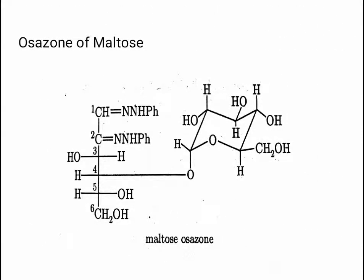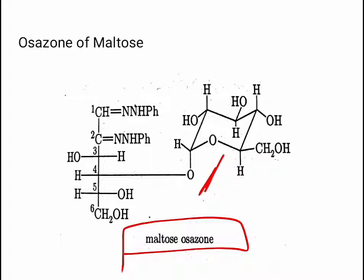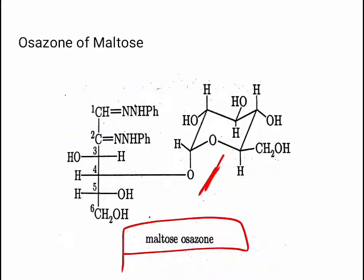The osazone of maltose: in the reaction with phenylhydrazine, the hemiacetal carbon reacts with phenylhydrazine to form the osazone, while the acetal carbon — involved in the glycosidic linkage — remains intact and does not react.